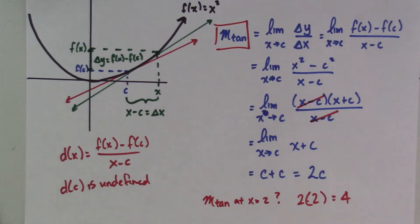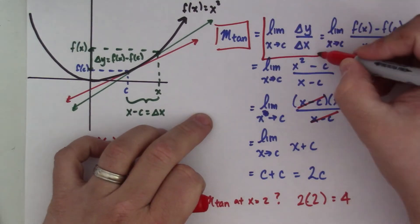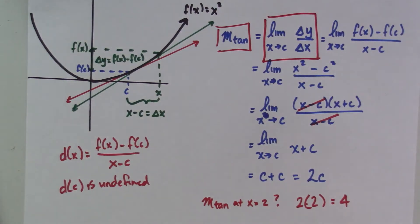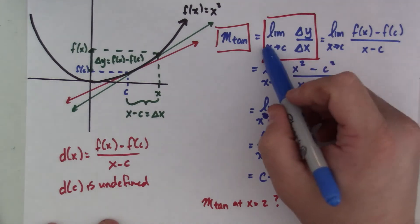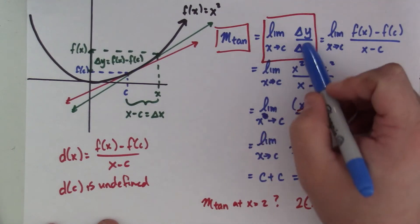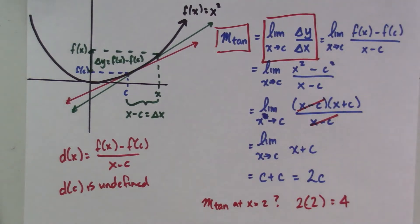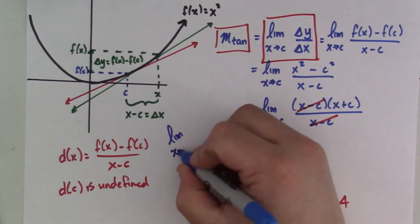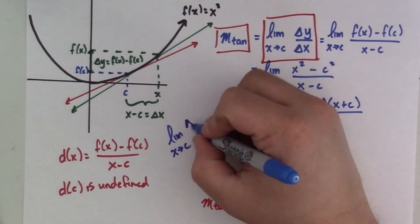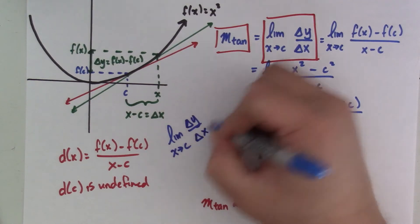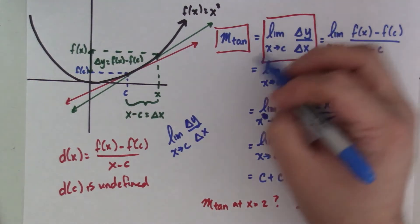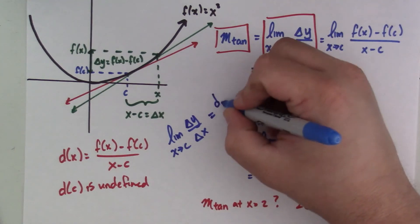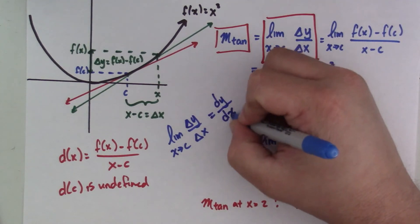We said that the derivative is the limit as x approaches c of delta y over delta x. And how we write that, so if I have the limit as x goes to c of delta y over delta x, which is the slope of the tangent line, all these things mean the same thing, we write that as dy dx.